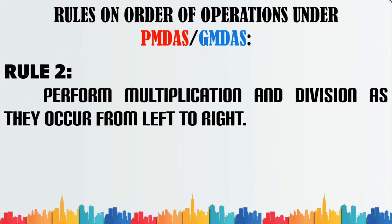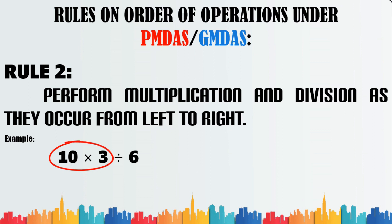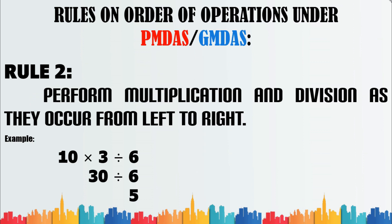Rule number two: perform multiplication and division as they occur from left to right. Example: 10 times 3 divided by 6 — we multiply 10 and 3 first before we proceed to division. Another example: 12 divided by 4 times 2 — we first find the quotient of 12 and 4 before we proceed to multiplication.